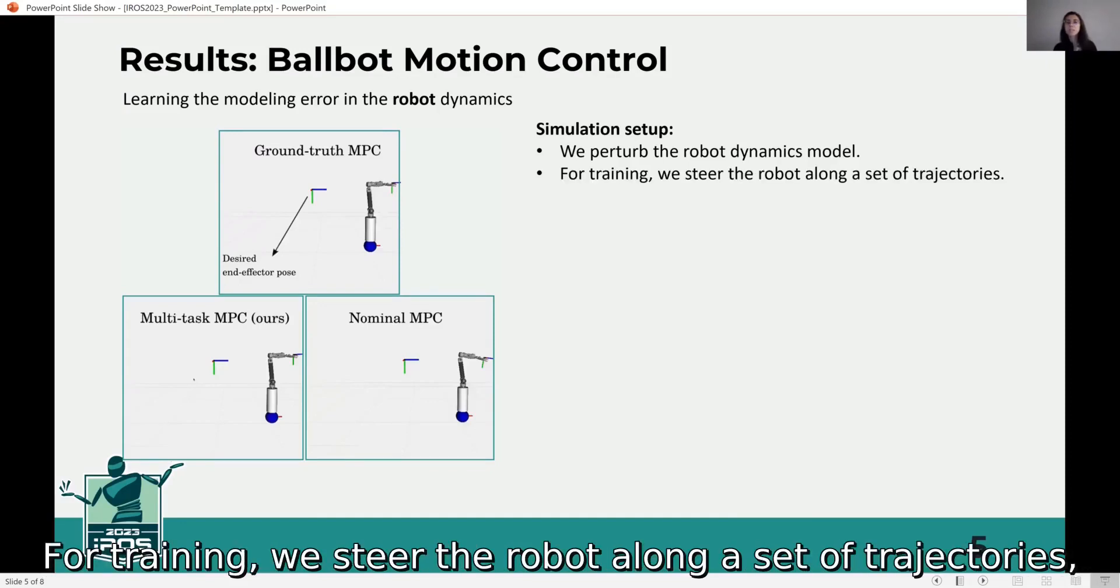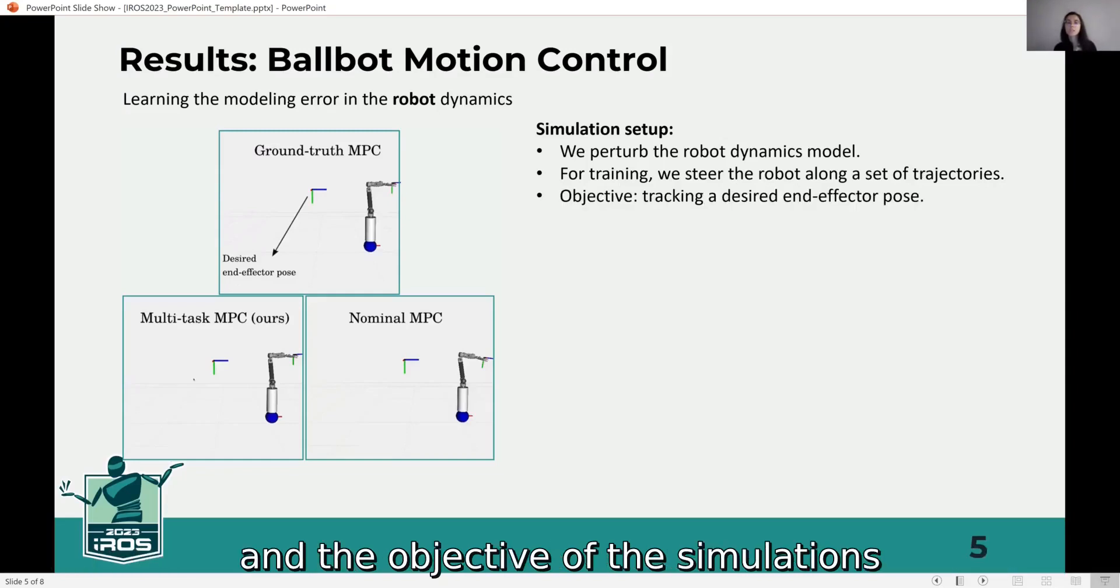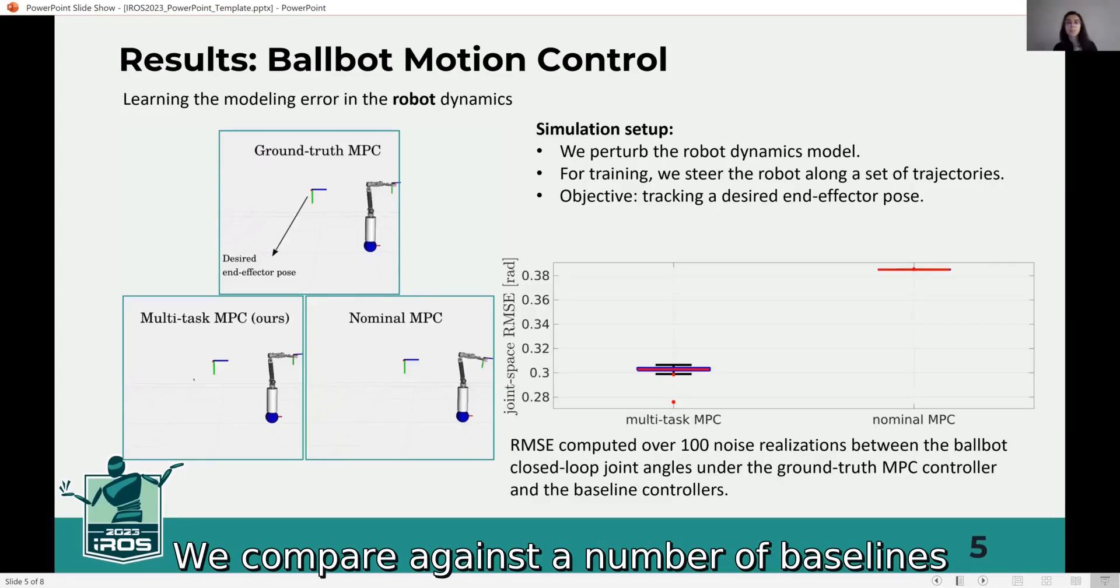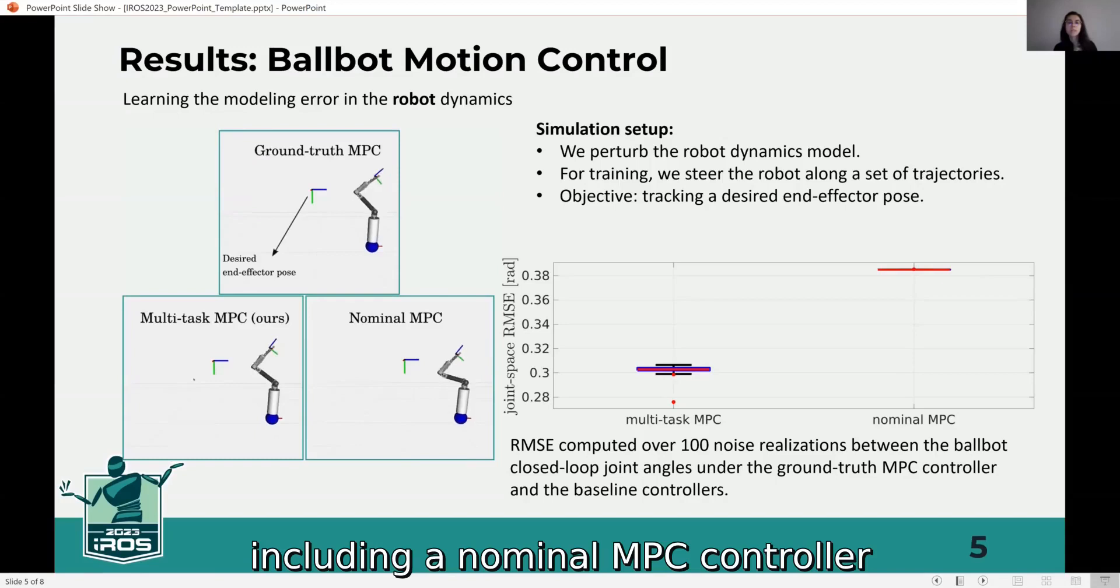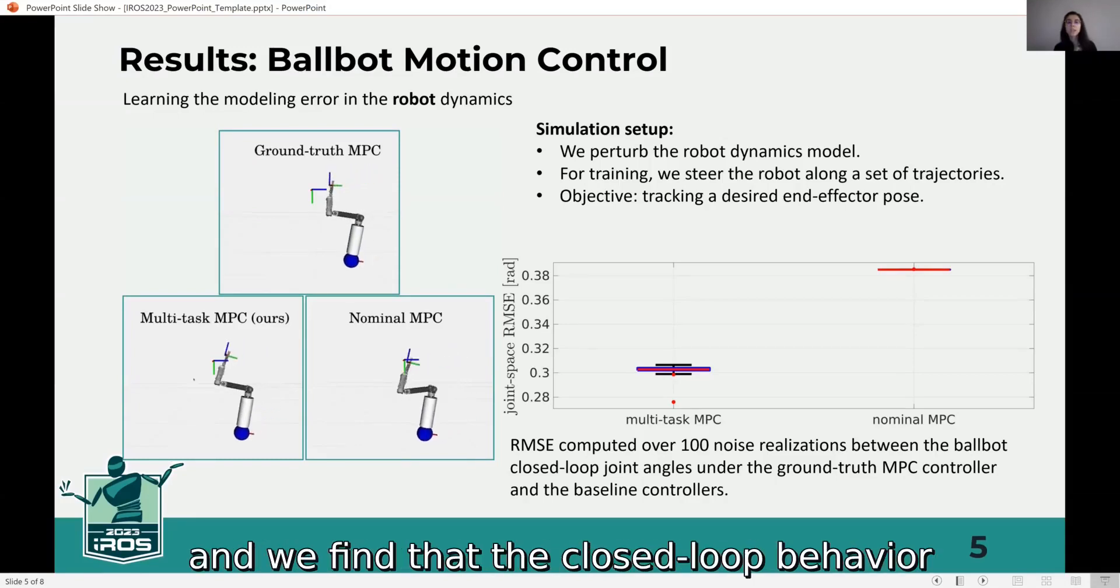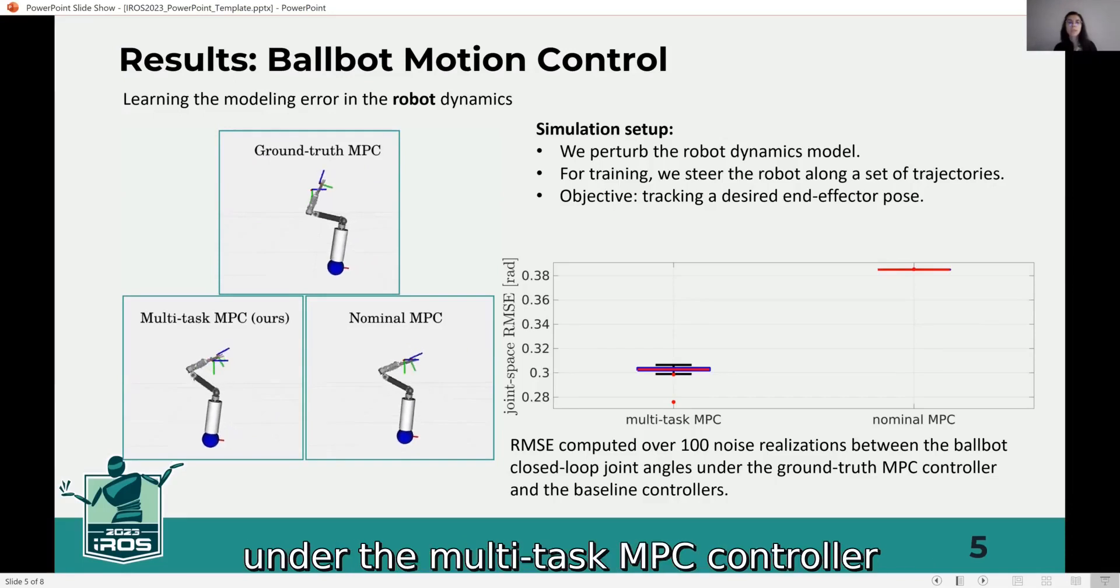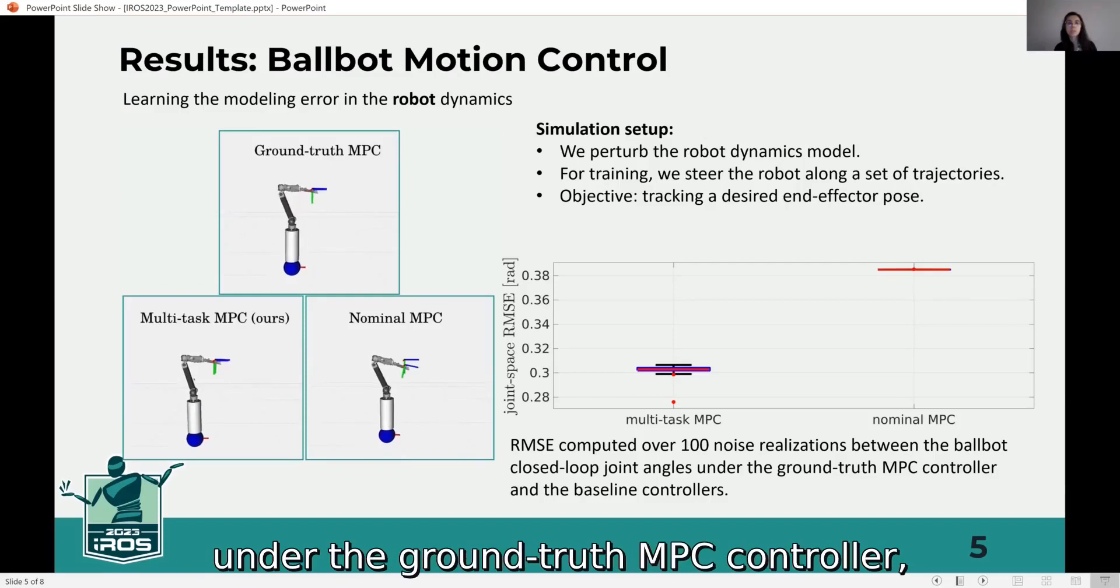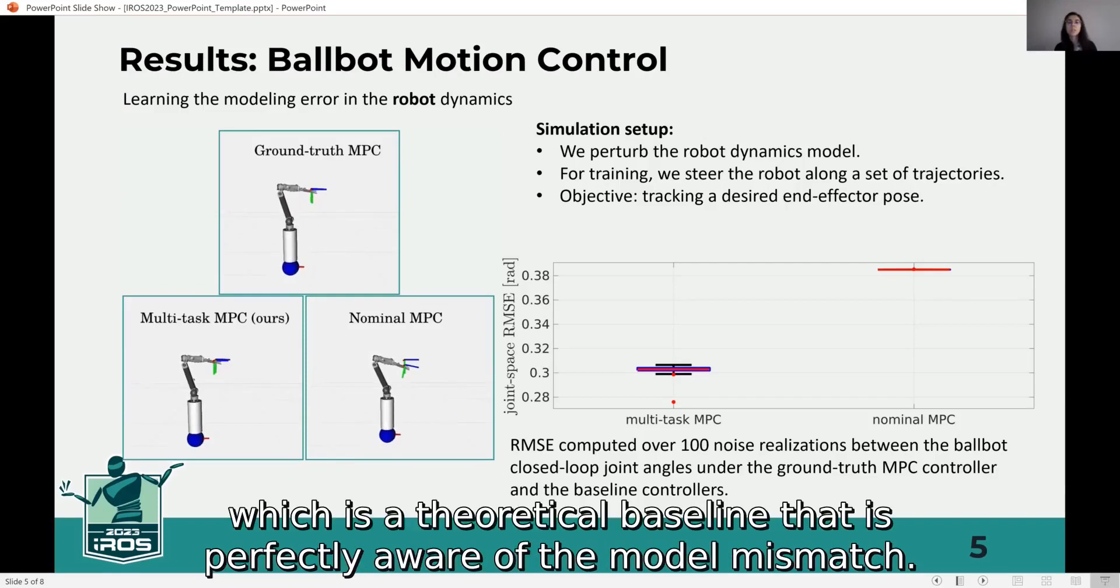For training, we steer the robot along a set of trajectories and the objective of the simulations is for the robot to track a desired end-effector pose. We compare against a number of baselines including a nominal MPC controller which does not perform any adaptation, and we find that the closed-loop behavior under the multi-task MPC controller is the closest to the closed-loop behavior under the ground truth MPC controller, which is a theoretical baseline that is perfectly aware of the model mismatch.